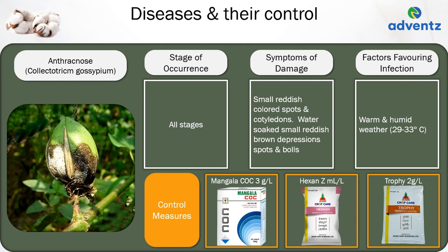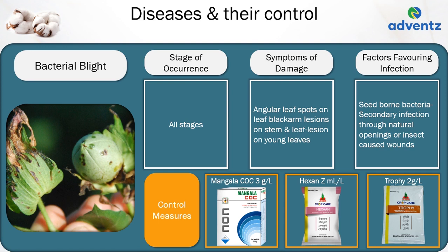The next disease is bacterial blight. It can occur at all stages. The symptoms of damage are angular leaf spots on leaves, black lesions on stem, and lesions on young leaves. It is a seed-borne bacterium with secondary infection through natural openings or insect-caused wounds. Control: apply Mangala COC at 3 grams per litre, or Jai Kisan Hexan, or Jai Kisan Trophy at 2 grams per litre.